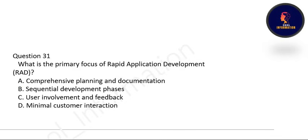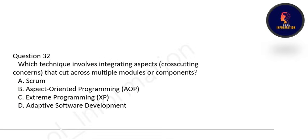Next: what is the primary focus of Rapid Application Development? As discussed earlier, the primary focus is user involvement and feedback. Next: which technique involves integrating cross-cutting concerns that cut across multiple modules and components? Correct option is B — Aspect-Oriented Programming, AOP.